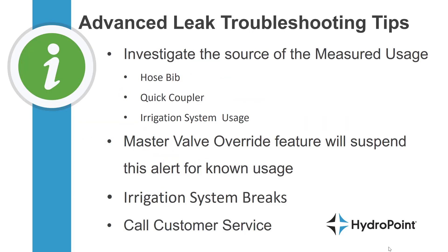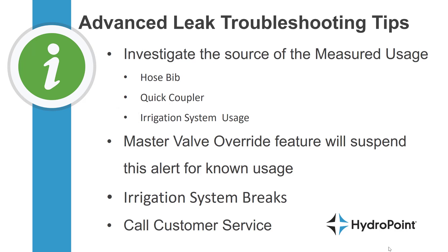When troubleshooting an advanced leak alert, start by eliminating the easy stuff. Talk to your maintenance folks about any use of hose bibs, quick couplers, or manual manipulation of the irrigation system that might have caused this alert. Remind anyone managing the system this way to use the master valve override feature available from the manual menu at the controller or on WeatherTrack mobile, which when active would prevent the controller from creating an advanced leak alert.